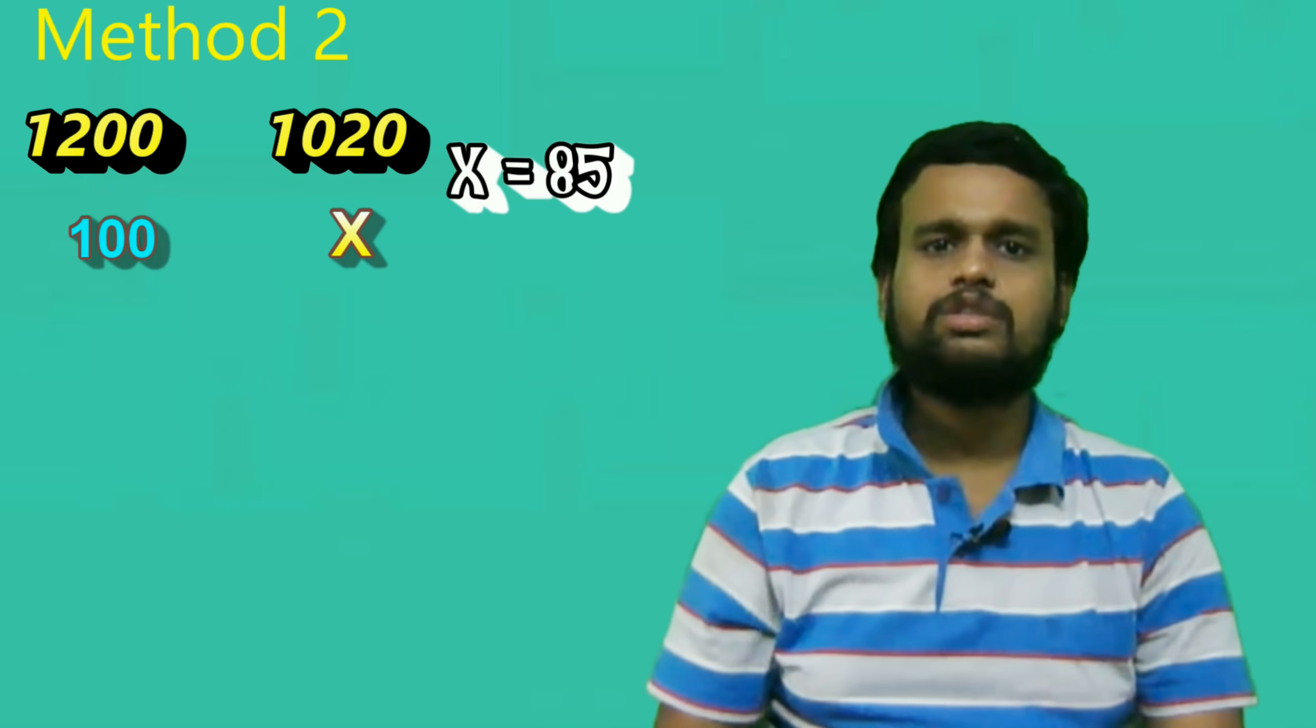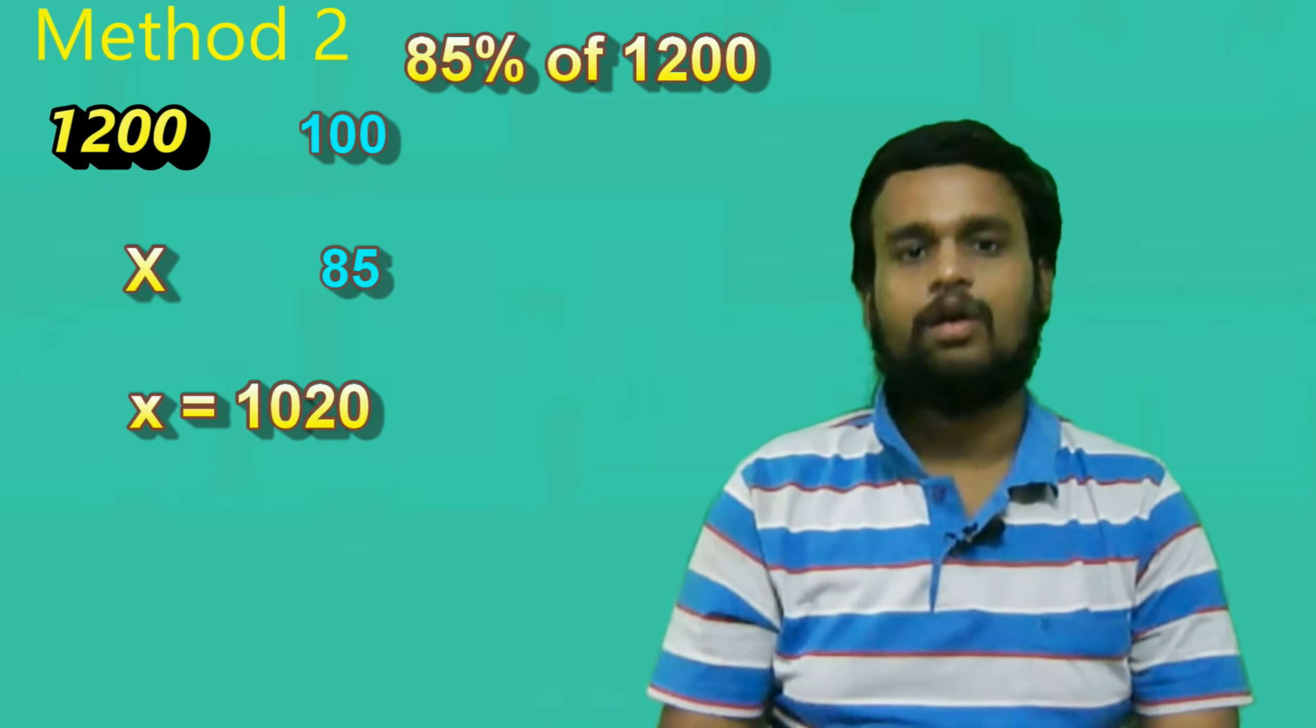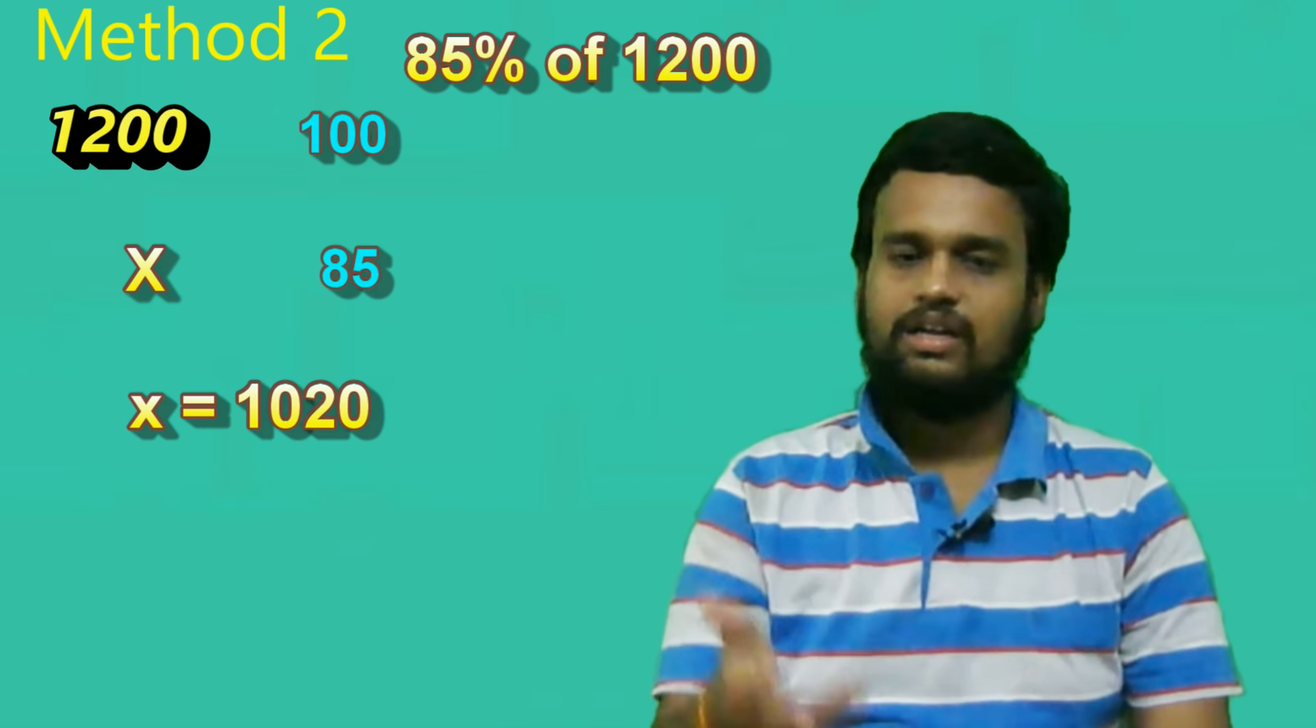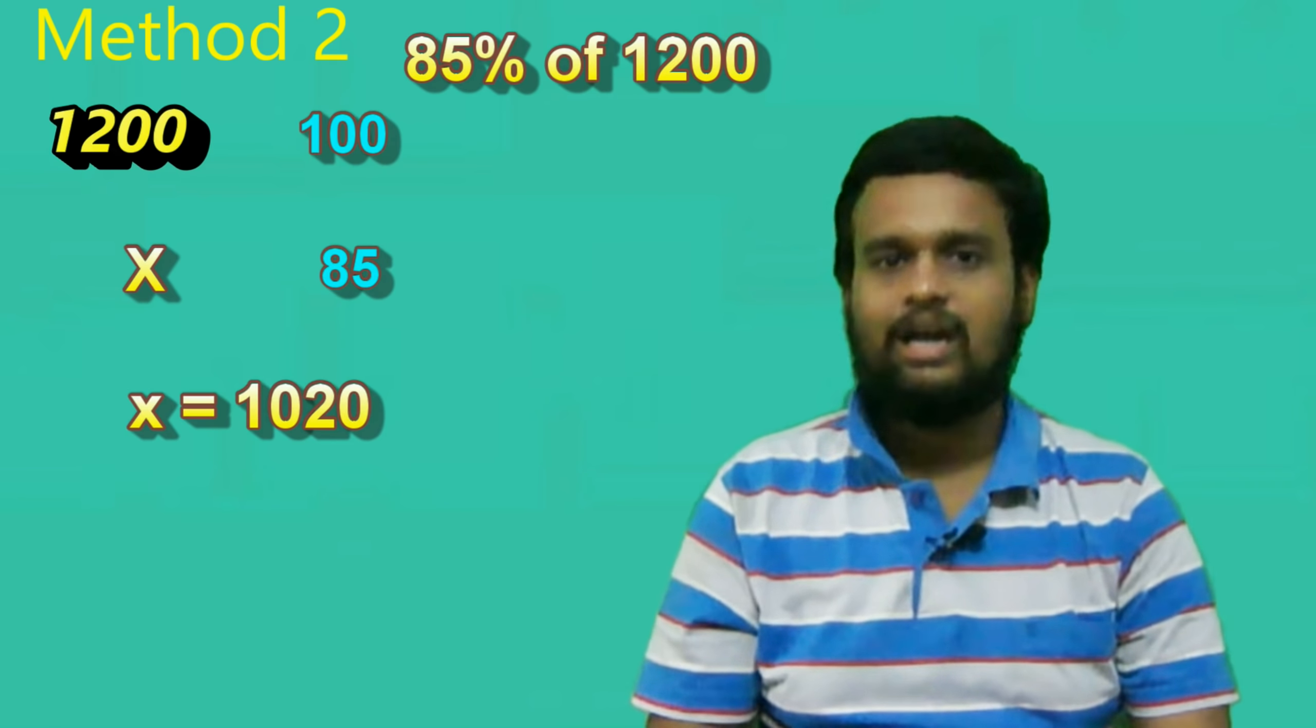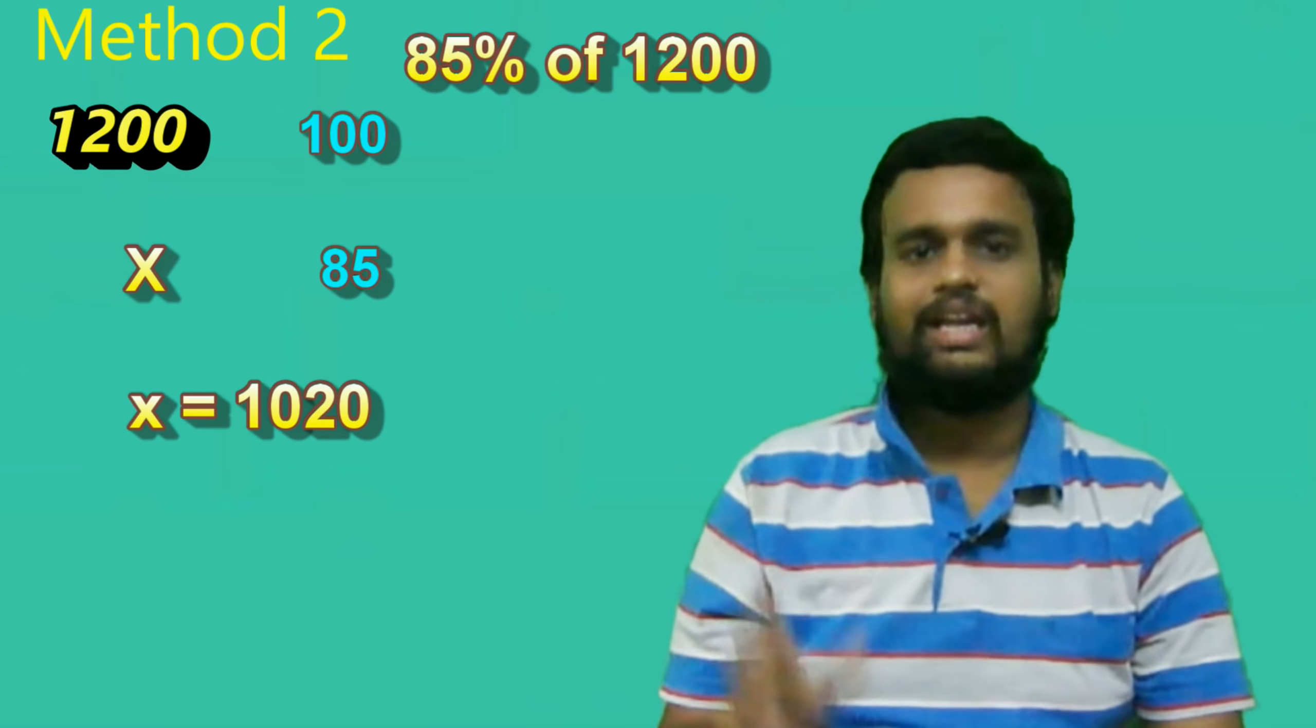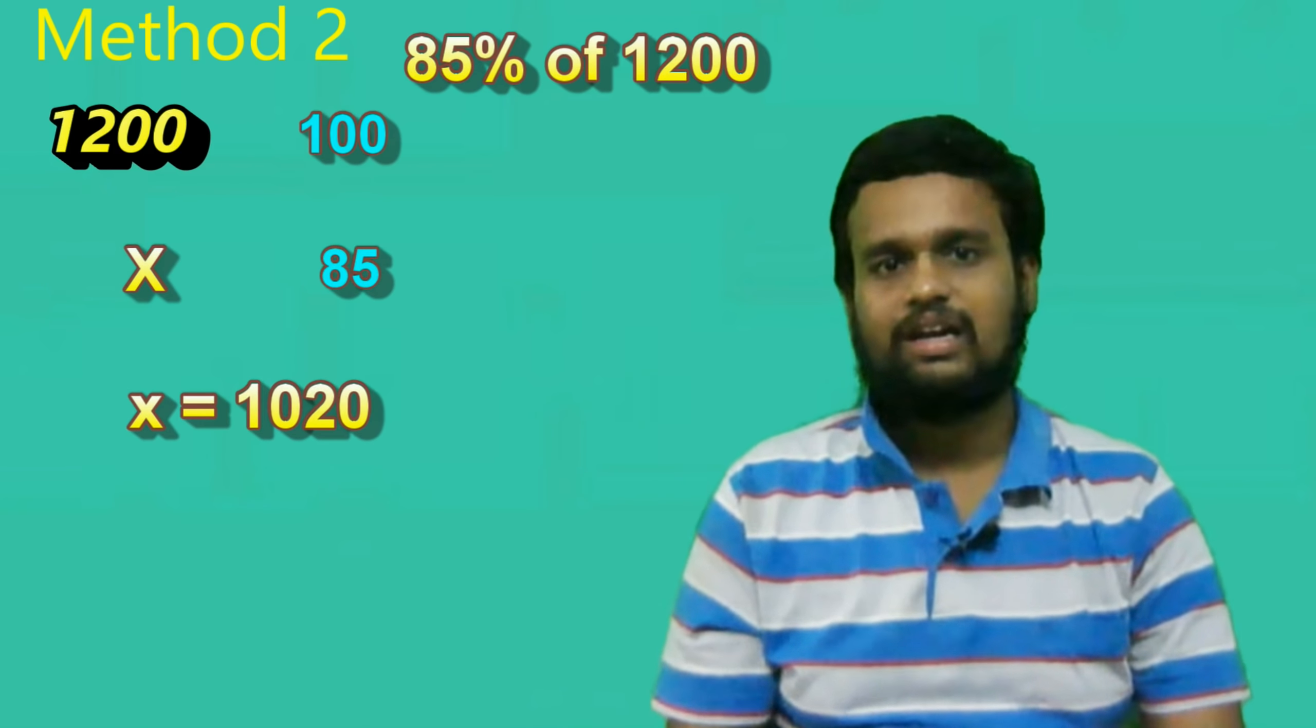Similarly, for the second example with 1200 total and 85%, we set it up as 100 is to 85 as 1200 is to X. Cross multiplying gives us 100 times X equals 1200 times 85. When you cancel and calculate, you get X equals 1020. So this is the basic concept. It's very easy.